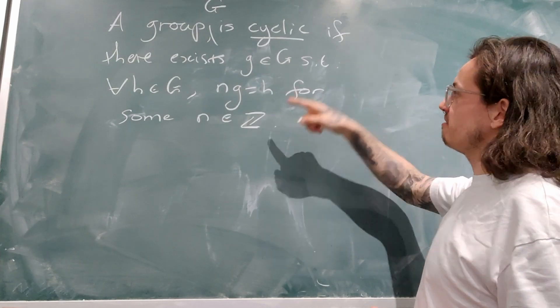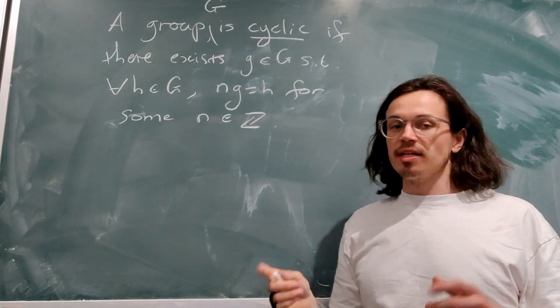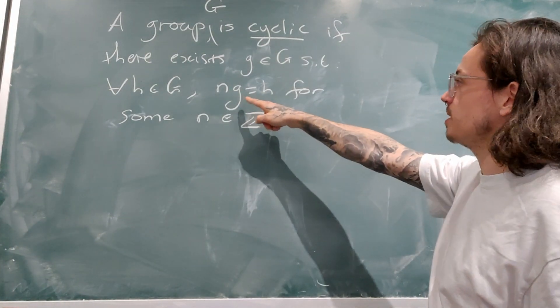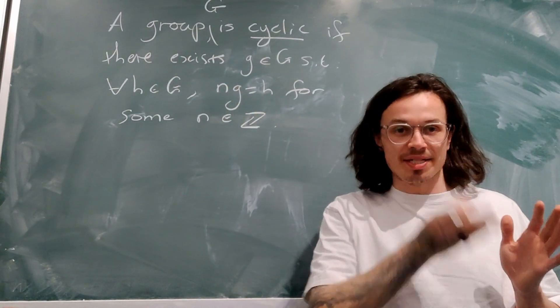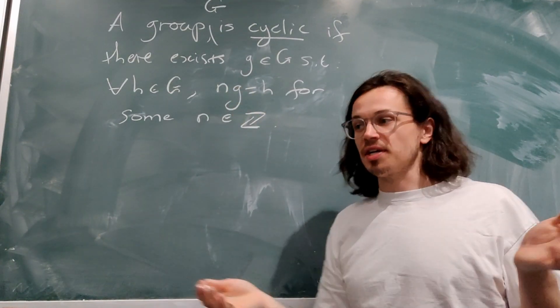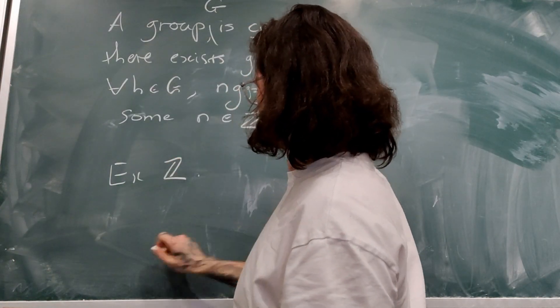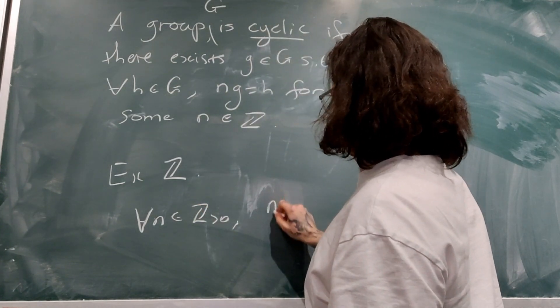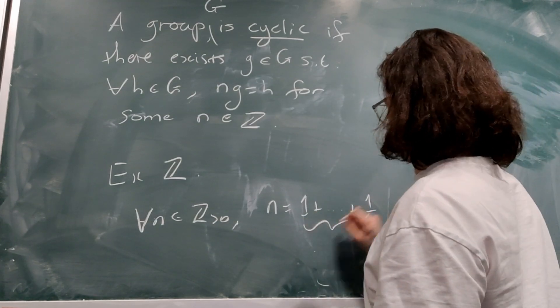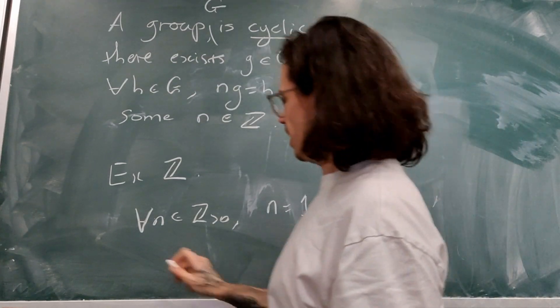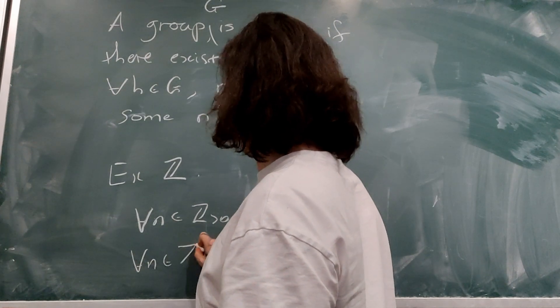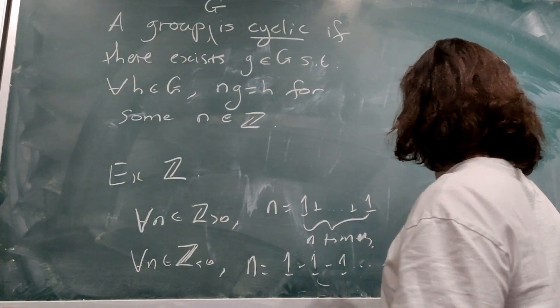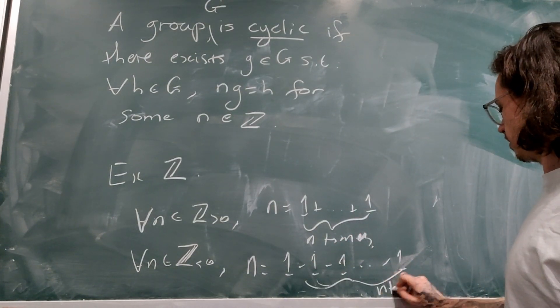A group is called cyclic if there exists a special element g such that all elements h inside the group can be given by adding g to itself a certain number of times. The integers are cyclic because for all n, an element of Z positive n is equal to 1+1+1 n times, and for all n, an element of Z negative n is equal to 1-1-... n+1 times.